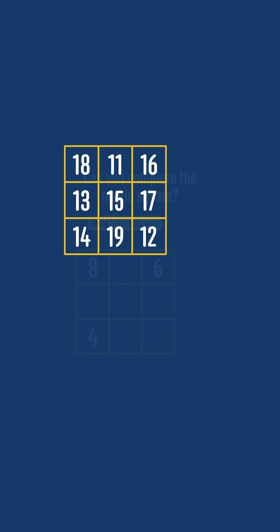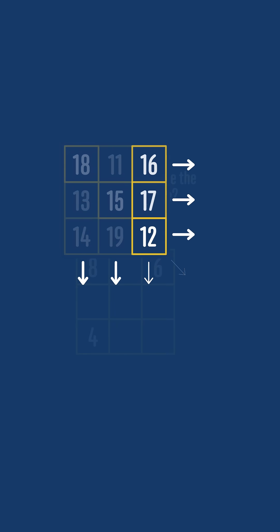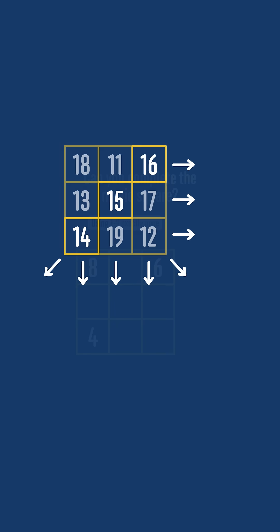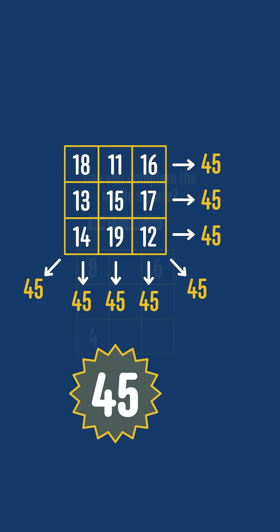A magic square is a grid of numbers where each of the rows, columns, and diagonals sum to the same total, sometimes called the magic total. For example, in this magic square, the magic total is 45. You can check that each set of three numbers that make up a row, a column, or either of the diagonals sums to 45.